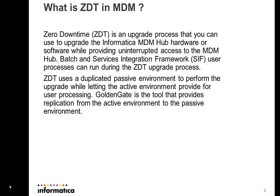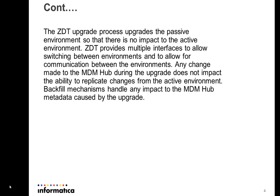ZDT uses a duplicated passive environment to perform the upgrade while letting the active environment provide user processing. Golden Gate is a tool that provides replication from the active environment to the passive environment. The upgrade process runs on the passive environment while the active environment is exposed to user processing. Golden Gate uses a change data capture technology to replicate changes from the active environment to the passive environment, so there is no impact to the active environment during the passive upgrade.